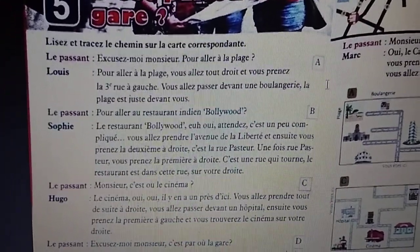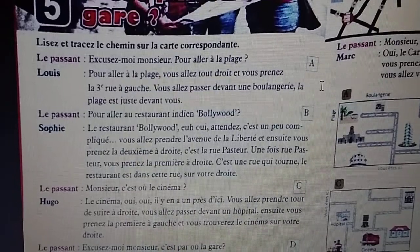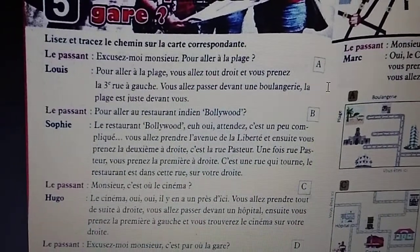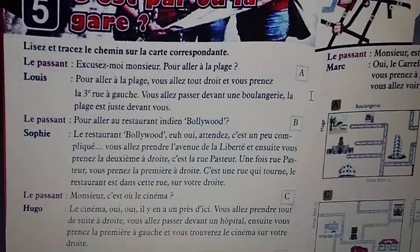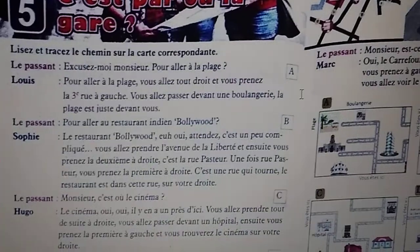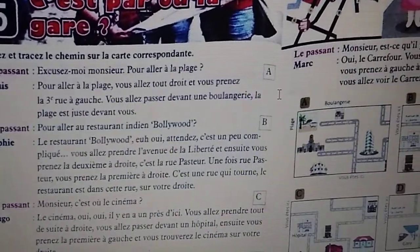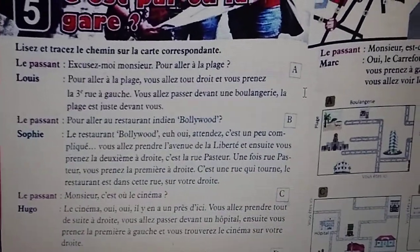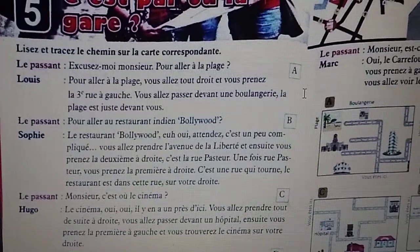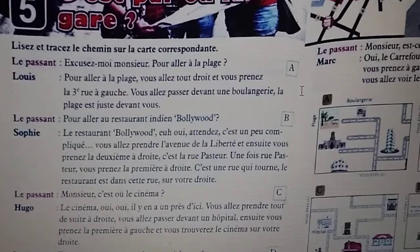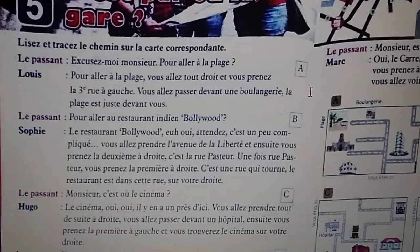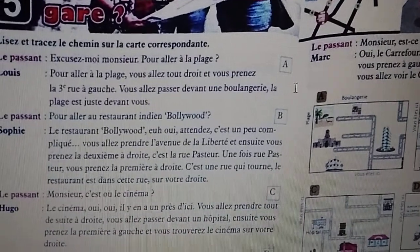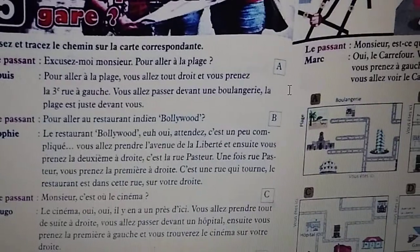This time the passer-by wants to go to the Indian Bollywood restaurant — that's the name of the restaurant. Sophie is helping and she says: yes, just wait, it's a little bit complicated. You have to take the Avenue de la Liberté, then take the second right — that is Rue Pasteur. Once on Rue Pasteur, you take the first right. The street curves there and the restaurant is on your right side.